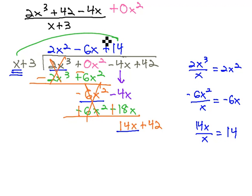Distributing that positive 14 through gives us 14x plus 42.